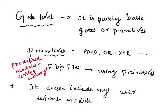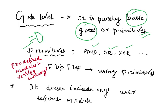What is gate-level modeling? If you write a Verilog code and include only basic gates — AND, OR, EXOR, NOR — all these are called basic gates, and they are also called primitives. Primitives are predefined modules already available in the Verilog library, so you don't need to write the whole code for each gate. If your design is based purely on these basic gates or primitives, then it is called a gate-level modeling technique.